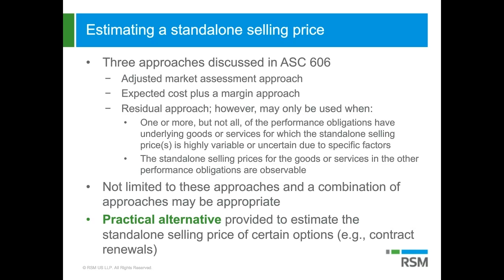A common example here would be software. If an entity sells software, services, and maintenance together, and the software price varies widely, but they also sell services and maintenance individually at relatively stable prices, you would use the residual approach to determine the standalone selling price of the software obligation. For people in the software industry: this residual approach is different from the one in existing software guidance. The existing software residual approach is used to actually allocate consideration, whereas the ASC 606 residual approach is used to determine the standalone selling price — and then that price is used to allocate.